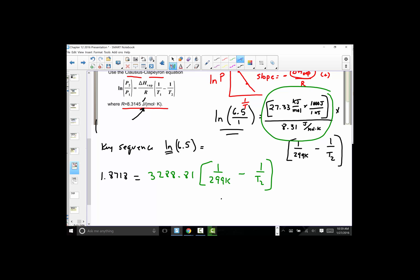So I'll just round that a little bit, and I still have the expression for the temperatures: 1 over 299 Kelvin minus 1 over T2. In the next step to simplify this, I'm going to divide both sides by 3288.81. I have 1.8718 divided by that previous answer of 3288.81, and now I'm getting a value of 5.6914 times 10 to the negative fourth.